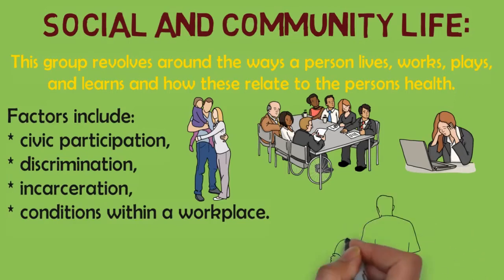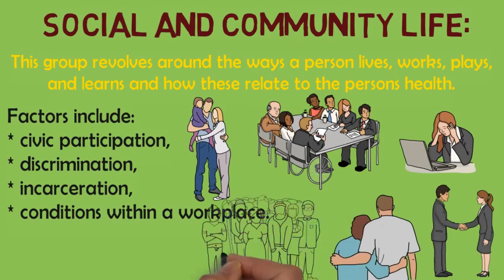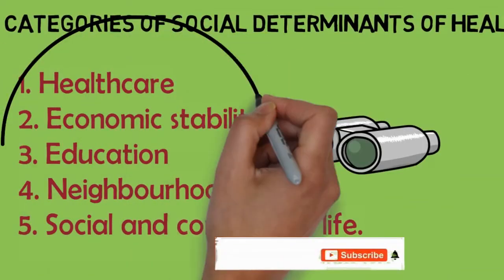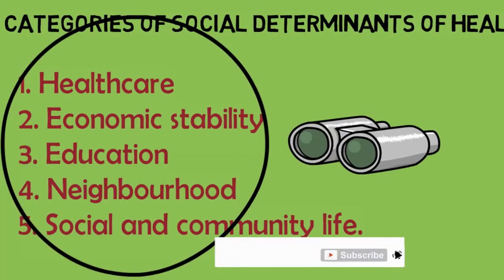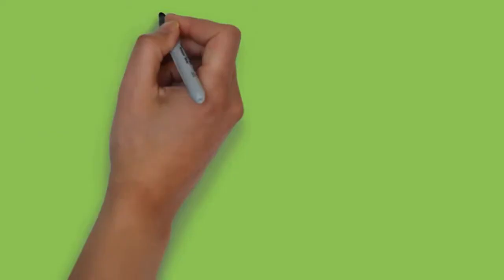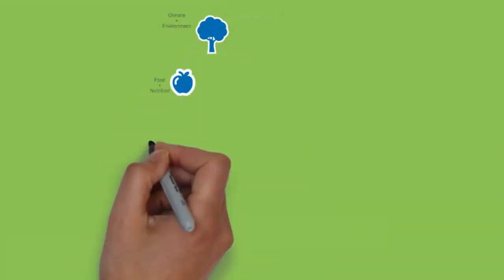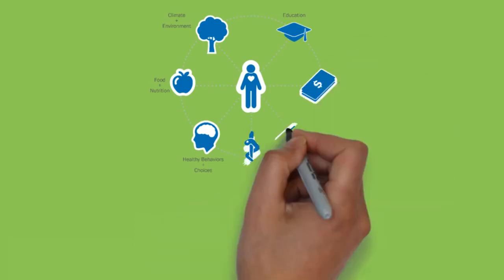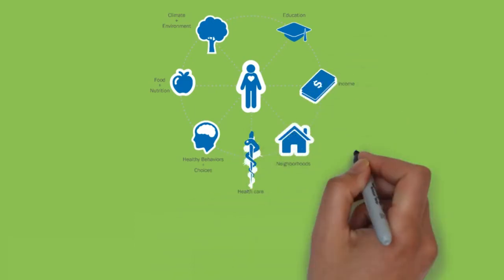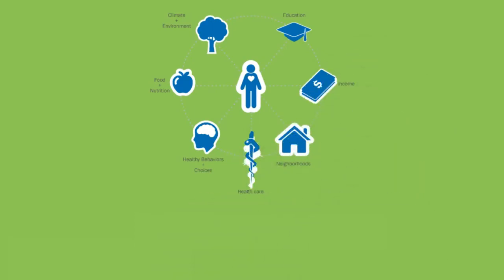Therefore, fostering positive relationships at home, at work, or in a person's community can improve public well-being. Meanwhile, the factors in each group are interwoven and often related to each other. There has been increased recognition that improving health and achieving health equity will require approaches that address social, economic, and environmental factors that influence health.